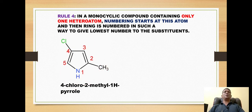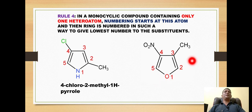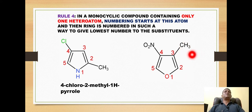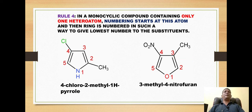For another five-membered ring, numbering starts with the oxygen heteroatom as position 1, then 2, 3, 4, 5. We number in the anti-clockwise direction because the methyl substituent occurs first at position 3. The name of this ring is 3-methyl-4-nitrofuran.